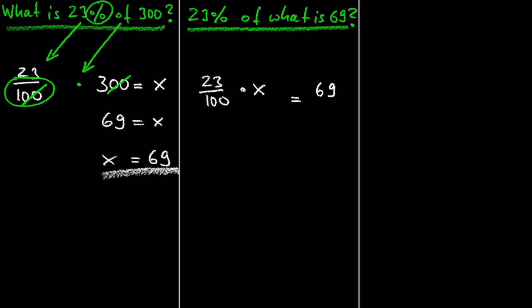This is the second case of percentage problems. How would we solve this equation? Similar to other equations, we just have to isolate the x, which we do by dividing both sides of the equation by 23 over 100. And after cancelling out 23 over 100 on the left-hand side...